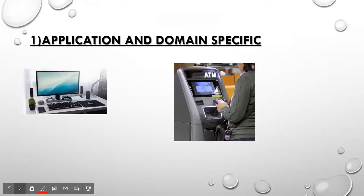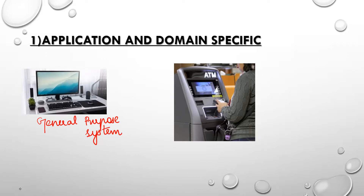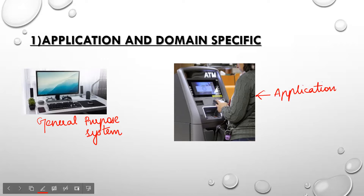The first characteristic is application and domain specific. First let us see what is a general purpose system. The best example of a general purpose system is your personal computer. With your personal computer you can hear songs, you can see videos, you can edit, you can browse, and you can do even more things. Whereas with an application specific system you can do only that application. For example, in your ATM you can either deposit money or withdraw money. You cannot do anything else.